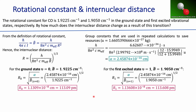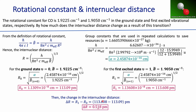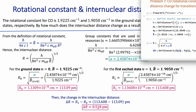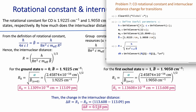The difference between those two values — subtracting one from the other — gives us that the internuclear distance change due to that vibrational transition is roughly 0.52 picometers. And that's basically all there is to this question.